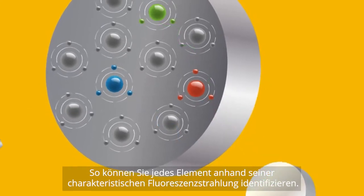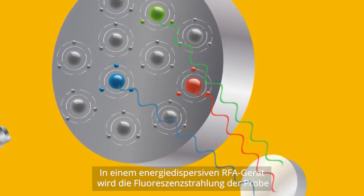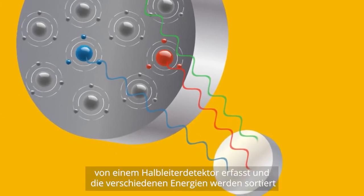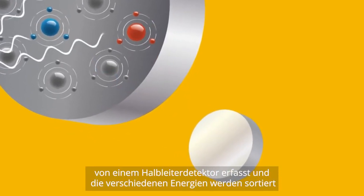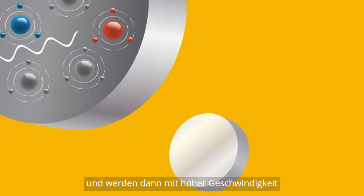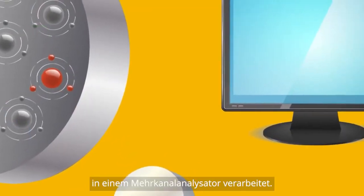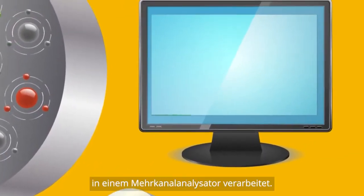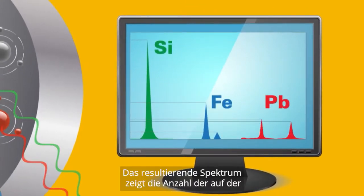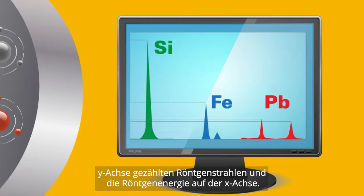That energy difference is unique for every element, so you can identify each element by its characteristic fluorescence radiation. In an energy dispersive XRF instrument, the fluorescence radiation from the sample is collected by a semiconductor detector, and the different energies are sorted and processed at high speed in a multi-channel analyzer. The resulting spectrum shows the number of X-rays counted on the Y-axis and the X-ray energy on the X-axis.